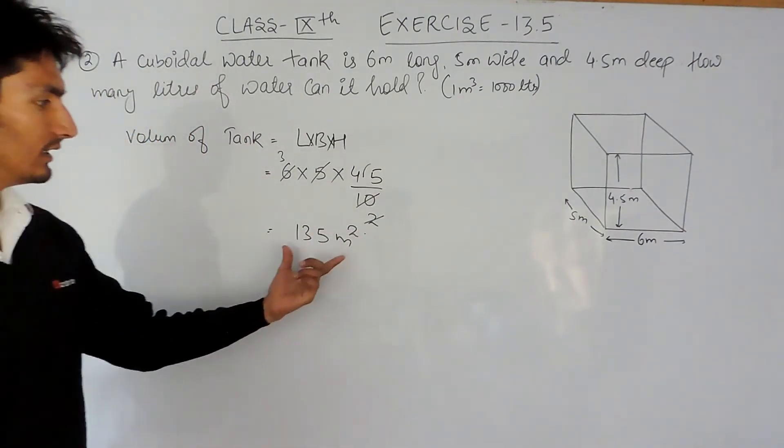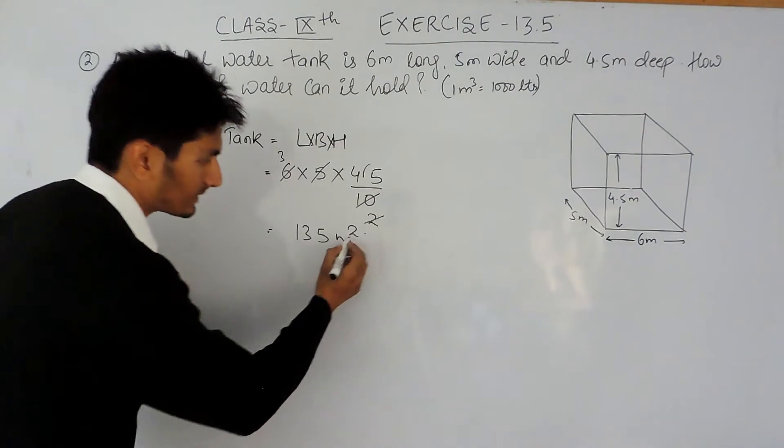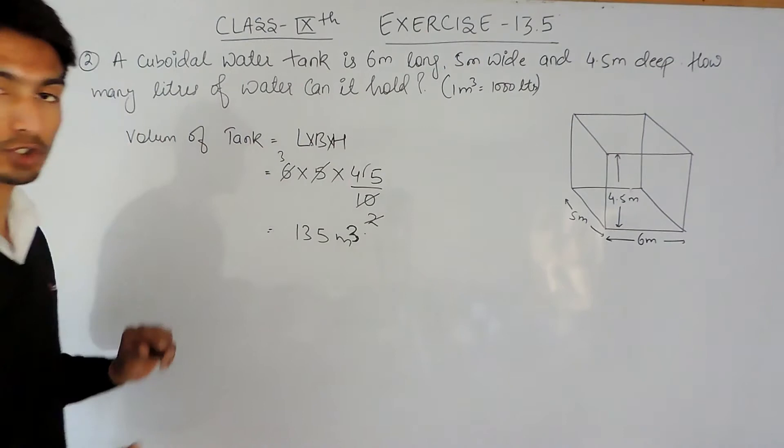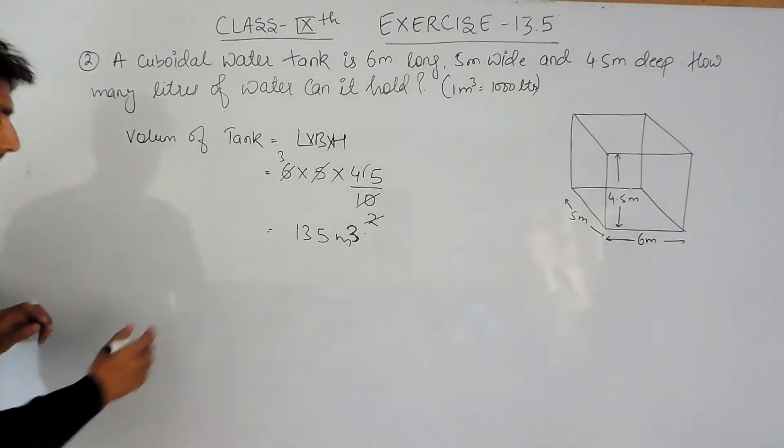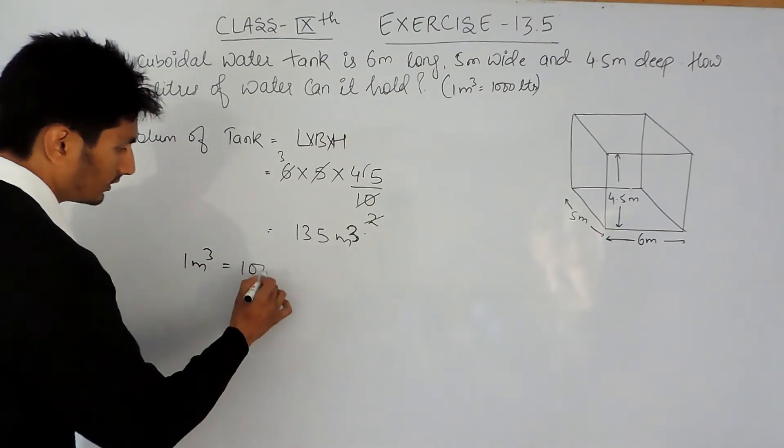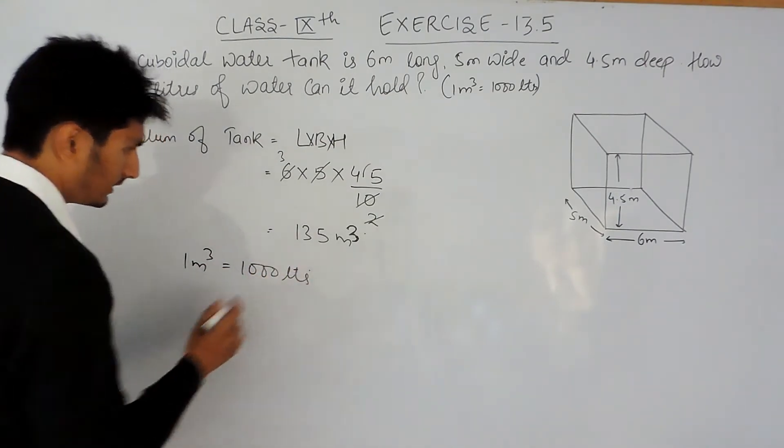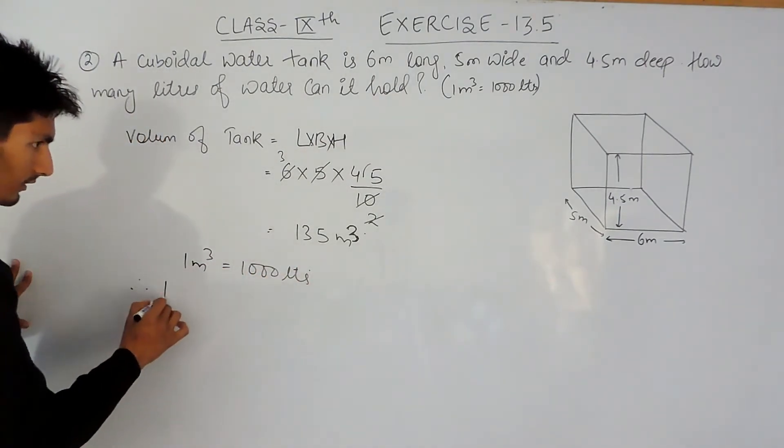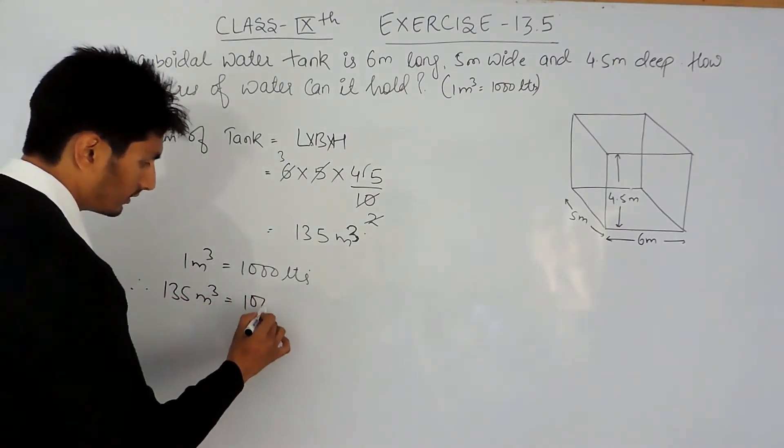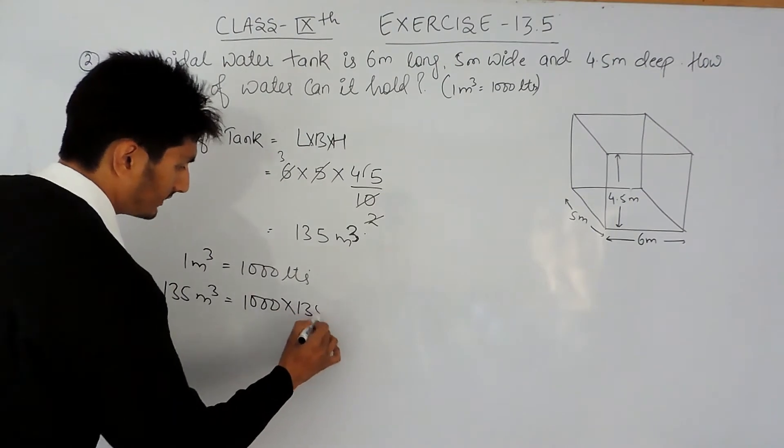Obviously this is volume, so the unit should be in cubic meters. Since 1 meter cube holds 1000 liters, therefore 135 meter cube must hold 1000 multiplied by 135 liters.